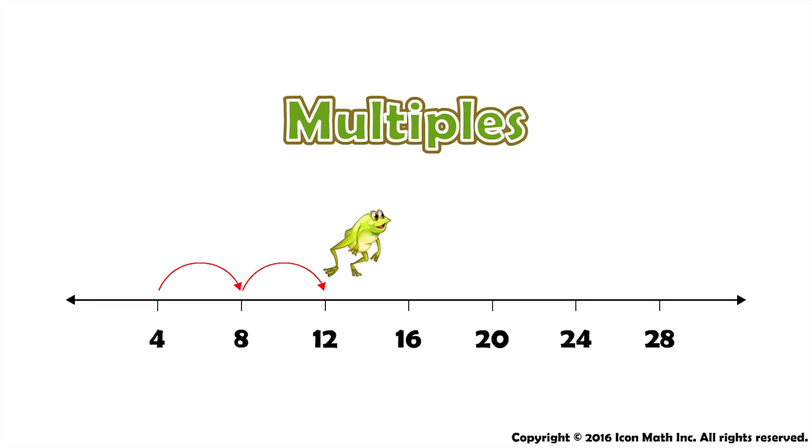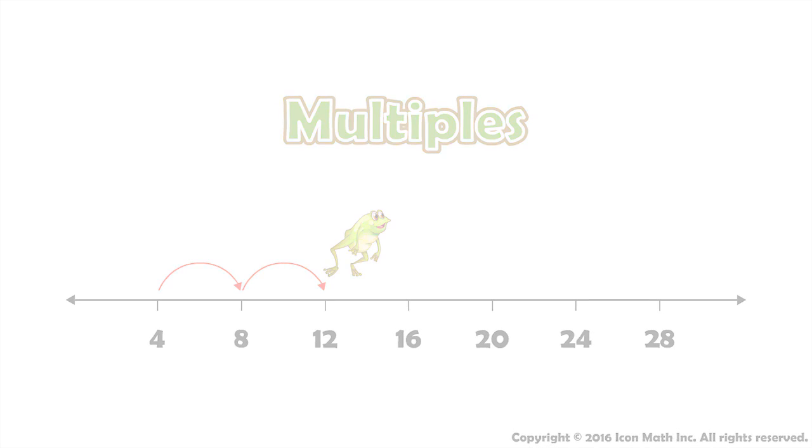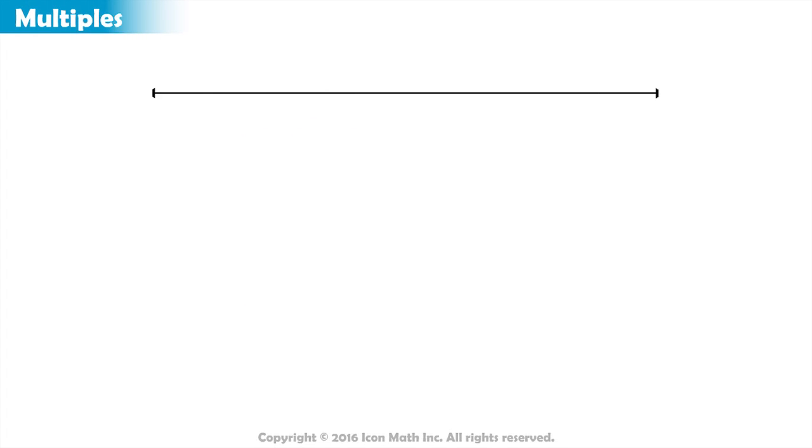Multiples. Let's take a look at this number line. If we take the number 4 and add 4 every time, or in other words skip count by 4 each time,